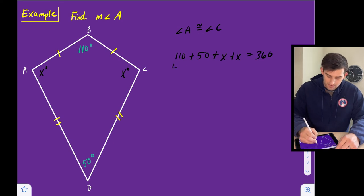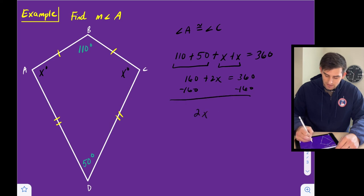So now we can combine like terms. Right here, we've got 160 plus 2X equals 360, subtract 160 from both sides, and we get 2X equals 200. Now we can divide by two to get X equals 100 degrees. So now we know that the measure of angle A is equal to 100 degrees.